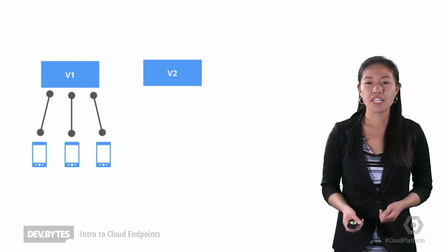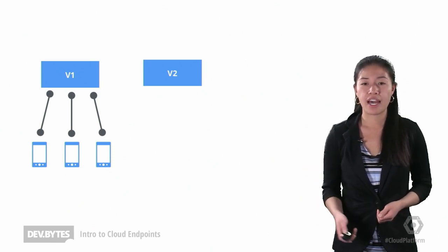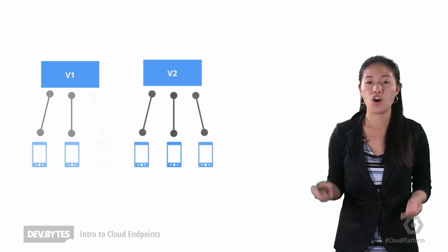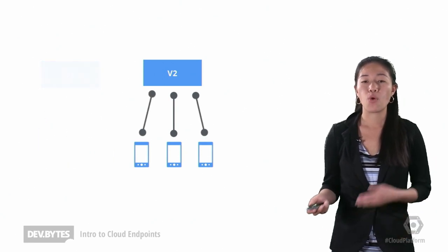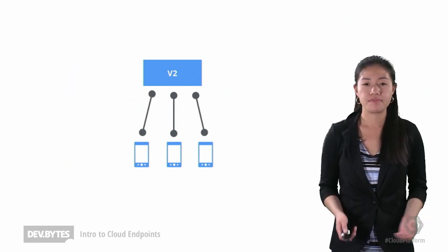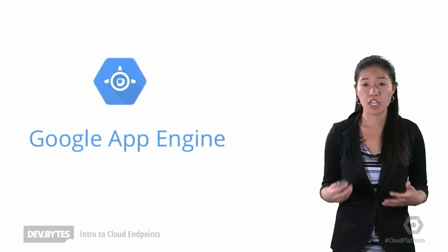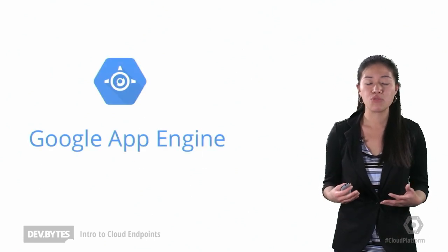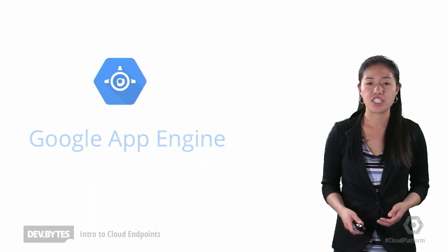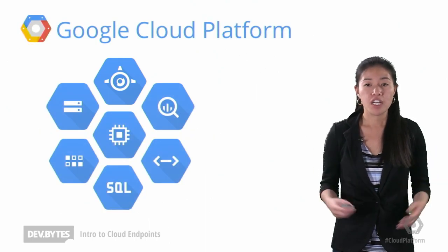In this example, new clients can start to talk to the v2 API, while your older clients slowly move over until you deprecate the old v1 API. The back end server we're talking about is actually running on Google App Engine, which is part of the broader Google Cloud platform.